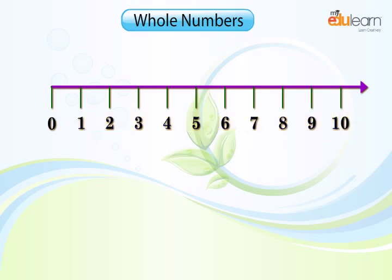Look at this number line. The distance between points labeled as 0 and 1 is called unit distance. Can you calculate the distance between 3 and 7? Yes, it is 4 units.